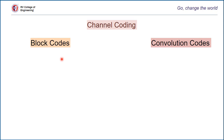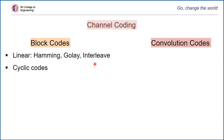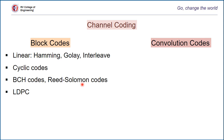There are many types of block codes. You have been introduced to a few of them, like linear block codes in the form of Hamming codes or Golay codes, or some interleaving codes. There are also cyclic codes, cyclic Hamming codes, and other famous types of block codes known as BCH codes and Reed-Solomon (RS) codes. More recently, the famous low-density parity-check (LDPC) codes have been introduced, which are also types of block codes.